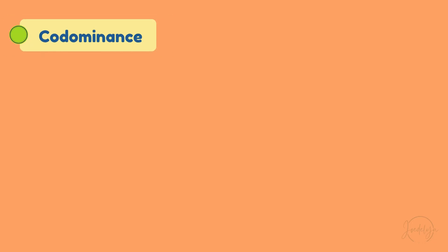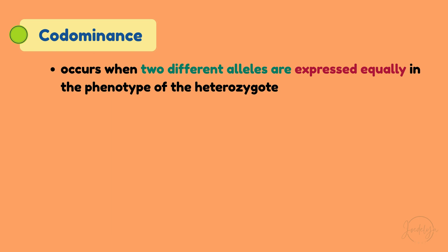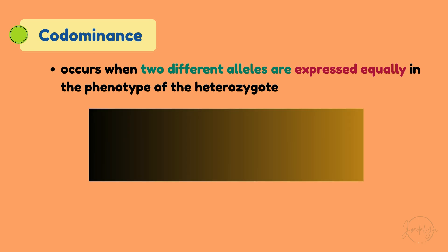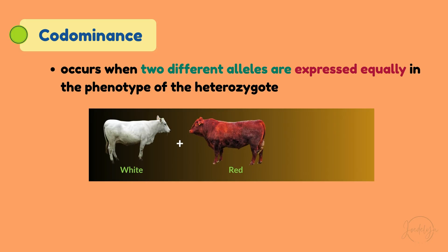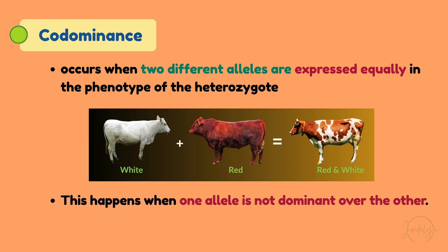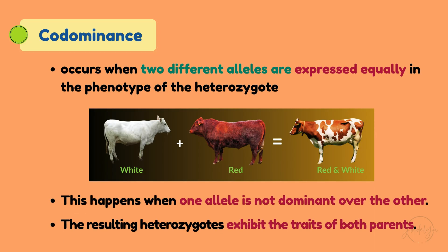Next, let's look at codominance, which occurs when two different alleles are expressed equally in the phenotype of the heterozygote. For instance, if we cross a white cattle with a red cattle, we don't get pink — we get a red and white spotted cattle. This happens when one allele is not dominant over the other.